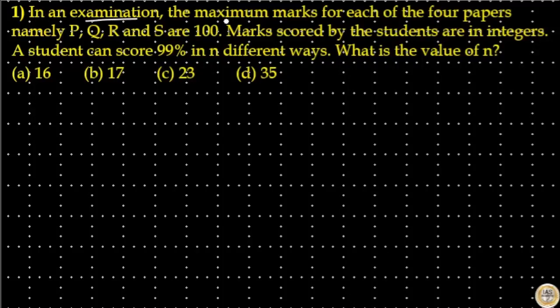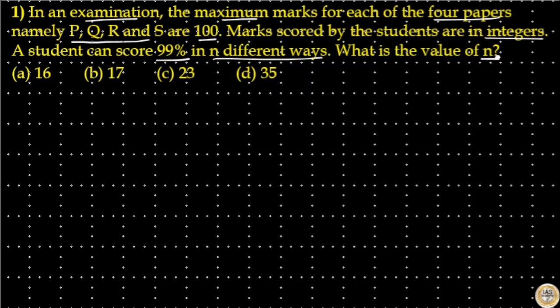In an examination, maximum marks for each of the four papers namely P, Q, R and S are 100. Marks scored by the students are in integers. A student can score 99% in N different ways. What is the value of N?